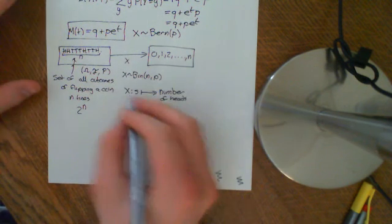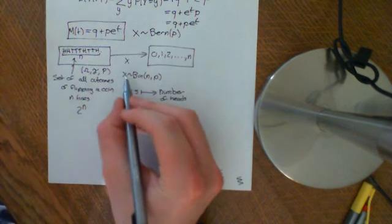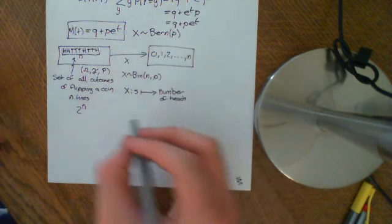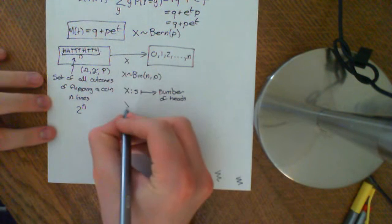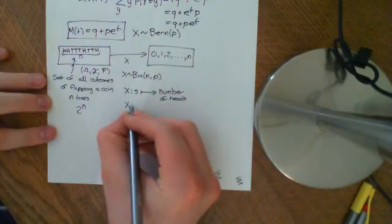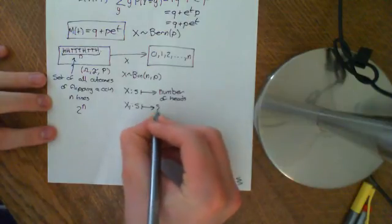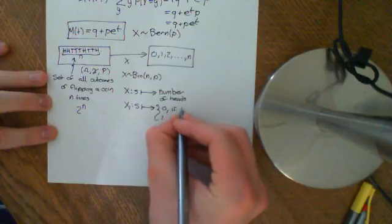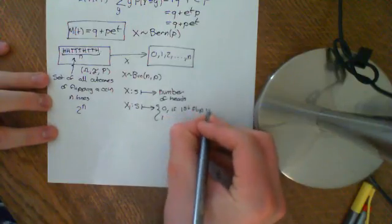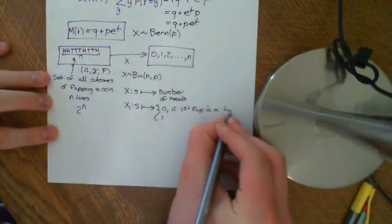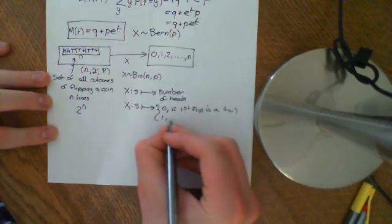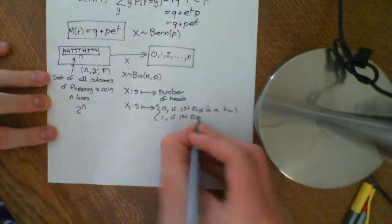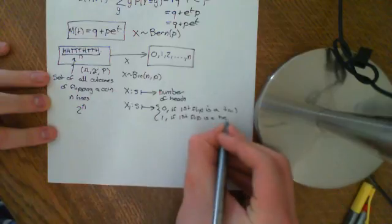Basically we can view this random variable as being the sum of a bunch of other random variables. We define X1, which is going to map each outcome onto either 0 or 1: it maps to 0 if the first flip is a tail, and it maps to 1 if the first flip is a head.